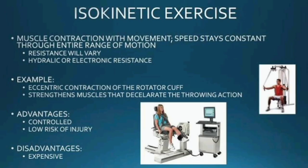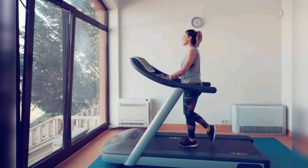Isokinetic — 'iso' means same, 'kinetic' means speed. Here, contraction and extension of the muscle both take place during movement, but the velocity matters. Whenever you come across the words speed or velocity, it indicates isokinetic exercise. The best example is a person running on a treadmill at a fixed speed — the speed is not increasing or decreasing, it remains constant, while movement of the muscles is taking place.